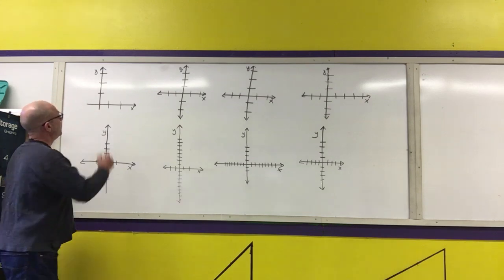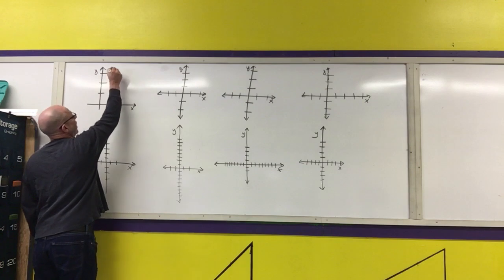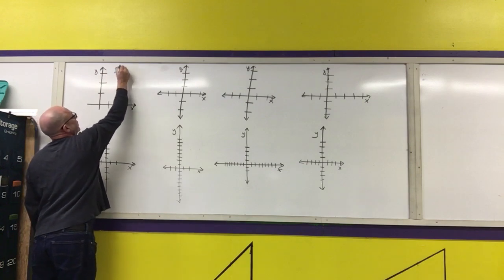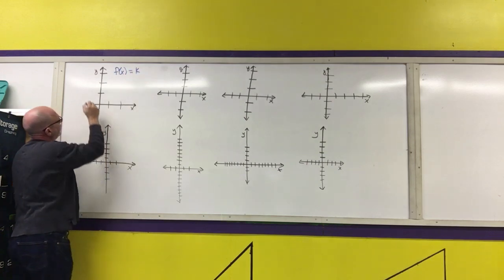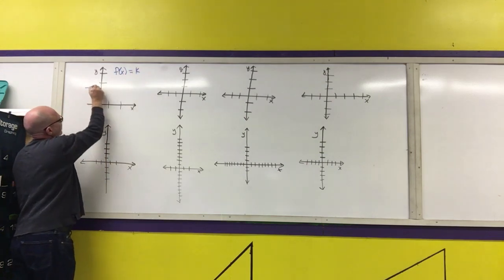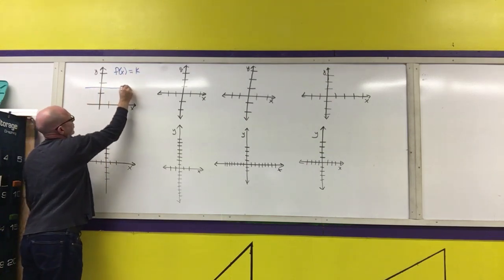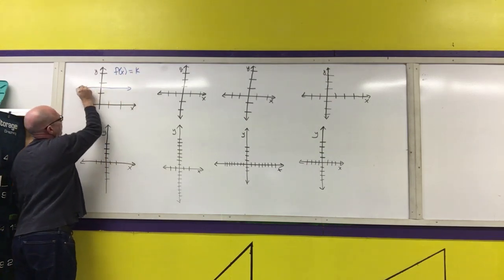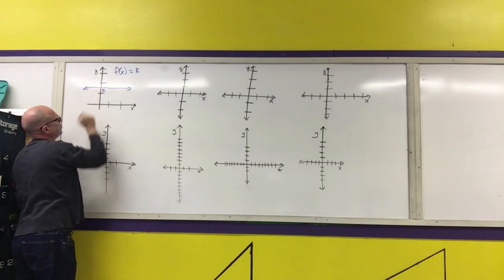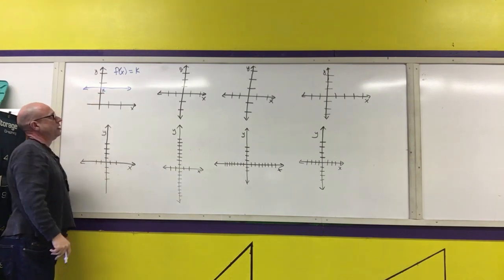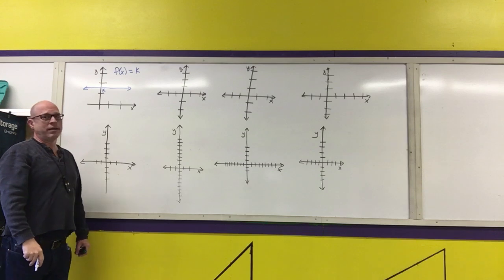The first parent function is f(x) = k, where k is any constant. That is the graph of a horizontal line that goes through the y-coordinate of the point k.